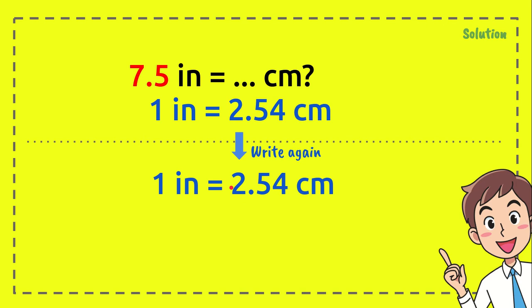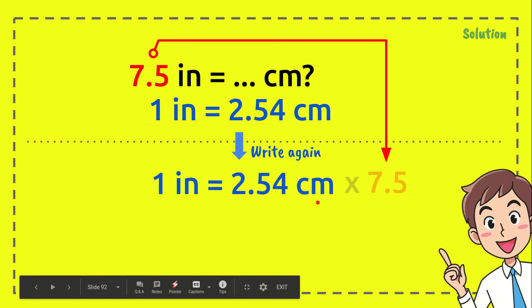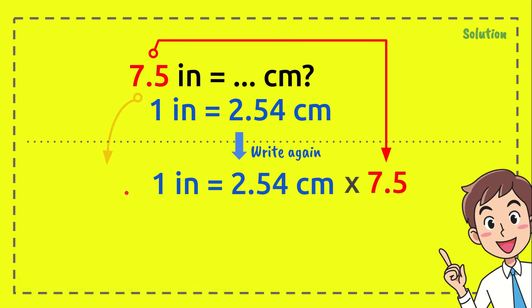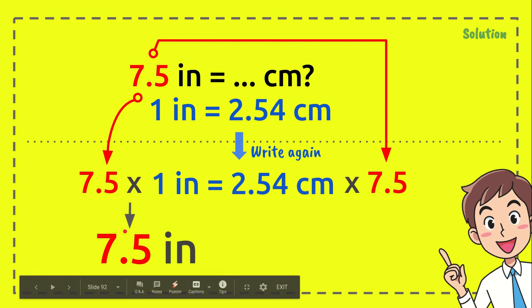Inside of that, we need to multiply 7.5 with this number, and we're going to put another 7.5 here and multiply with 1. Now, 7.5 times 1 equals 7.5, right? 7.5 inches.